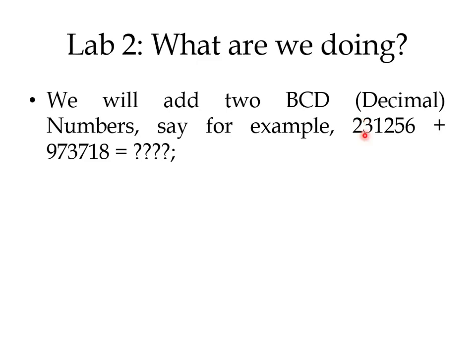Look at the numbers here. I wrote two numbers: 2-3-1-2-5-6 plus 9-7-3-7-1-8. What is the problem we have here? If you look at both numbers, each has six digits. This is a trouble because all the accumulators we have can take only one byte.